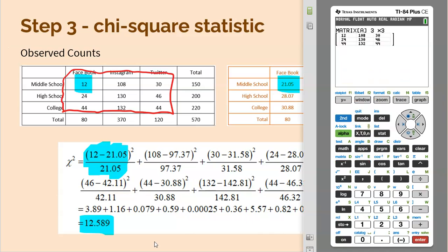Now the first thing I'm going to do is in matrix A, I'm going to put those observed counts. That's the 12, the 108, the 30, the 24, the 130, the 46, the 44, the 132, and the 44. You're literally making a table in the matrix just like we see in our two-way table. All right, once you're done entering all those in, take your time to do that, triple check that you got them all in there right.